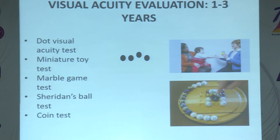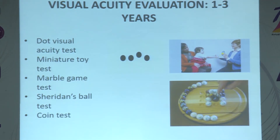For children between one to three years of age, some art is required in checking visual acuity. We can use the dot visual acuity test or, most commonly, the miniature toy test, where the child can identify and extend his hand to catch the toy. Similarly, we can use the marble game test or Sheridan's ball test.